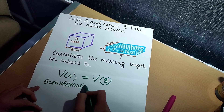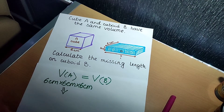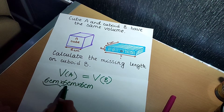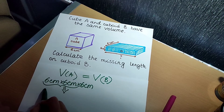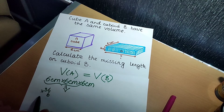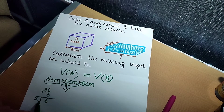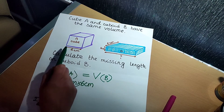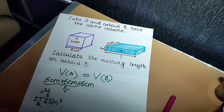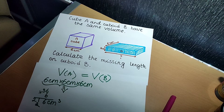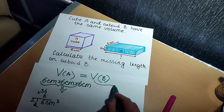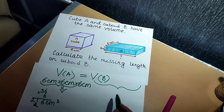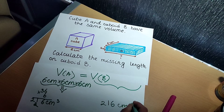So the volume of the cube is 216 centimeters cubed. Now the volume of the cuboid also needs to be 216 centimeters cubed. We have the cuboid's depth — 6 centimeters — and its height — 4 centimeters — but one dimension is missing. We can see that on the cube side we have 6 times 6, which is 36, so on the cuboid side four times something should equal 36. Four times nine is 36, so nine centimeters is our missing length.